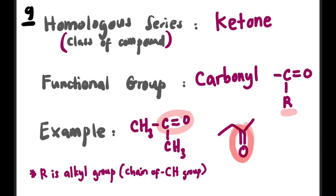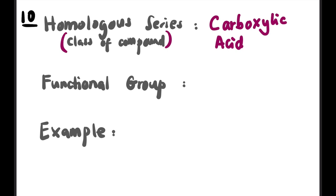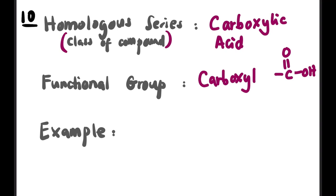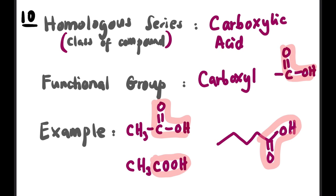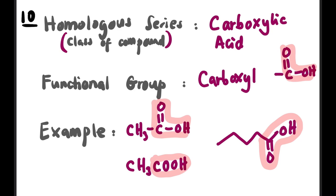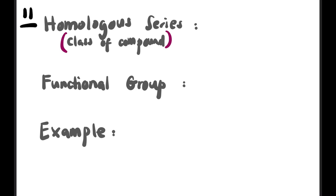Now let's look at derivatives of C=O. The first is carboxylic acid, with the functional group called carboxyl (–COOH). Its structure is C=O with –OH at the end. Circle the entire C(=O)OH and label it carboxyl. Important: you cannot separate it into carbonyl and hydroxyl — they must be circled together as one unit, –COOH.